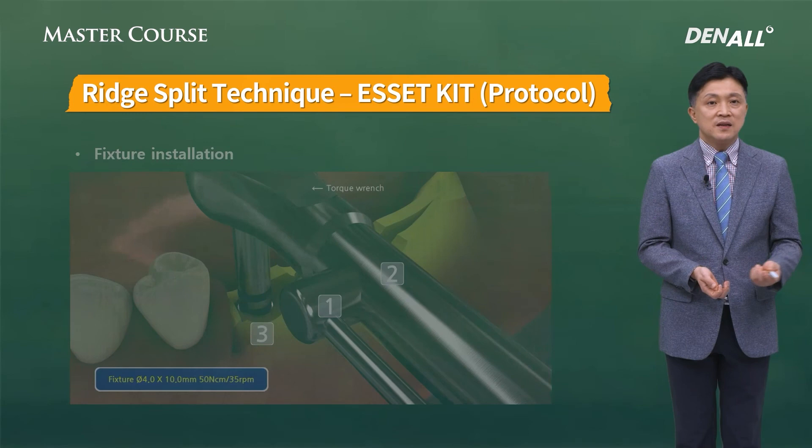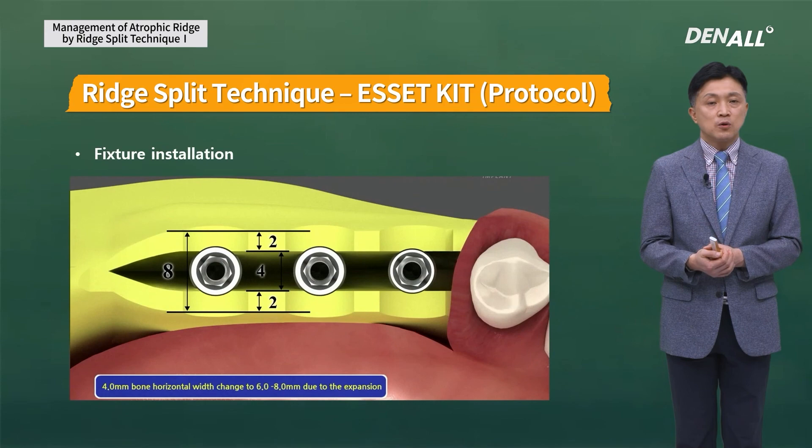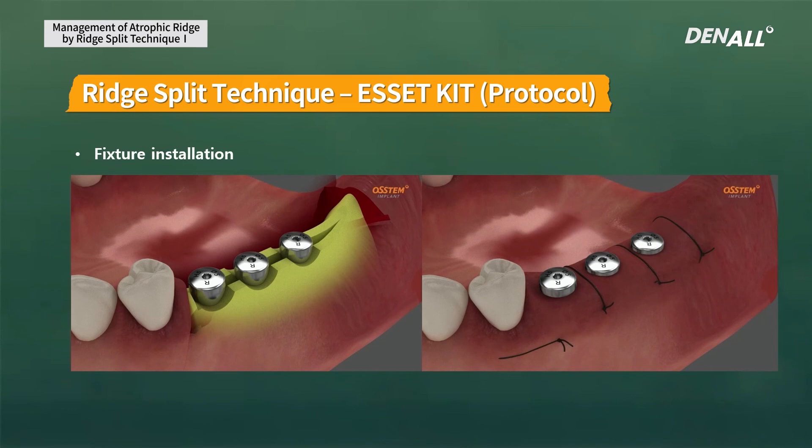The detailed position of the implant will be addressed in the next lecture. On the buccal and lingual sides, 2 mm of bone should remain. This is how you should place the implant. If there is good primary stability, you can connect the healing abutment. In most cases, favorable primary stability can be obtained, and you can close the flap without doing graft.